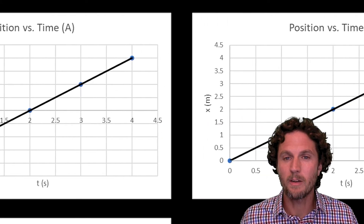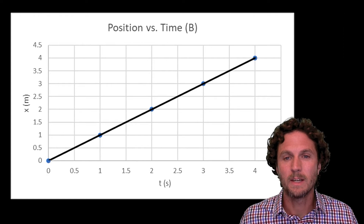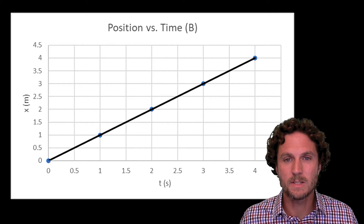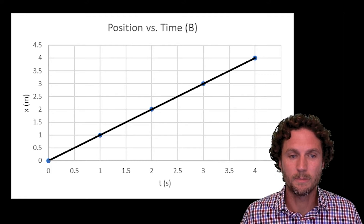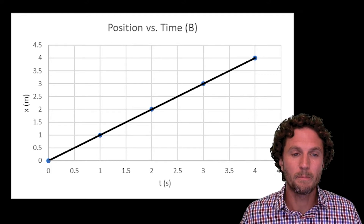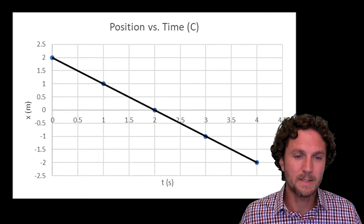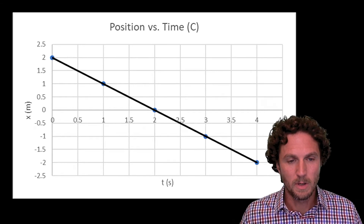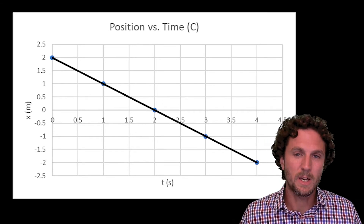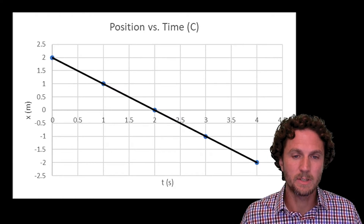When we look at graph B, it has the same slope as A; however, her starting position was at zero, and clearly she started to the left of the basketball hoop. If we look at graph C, it shows her starting position as positive two, and it also shows a negative slope, which would indicate that she was moving from right to left — the opposite of what she actually did.